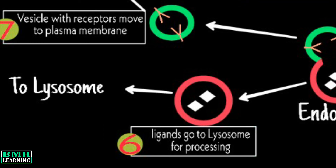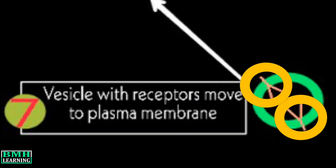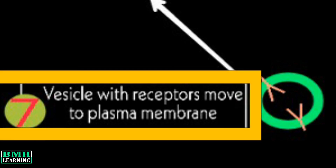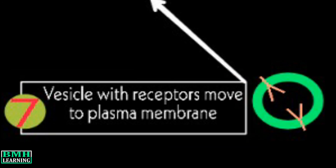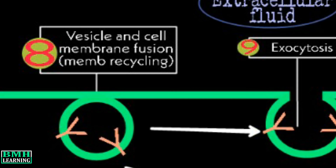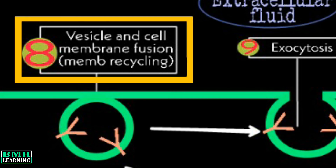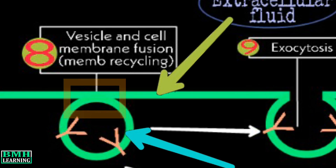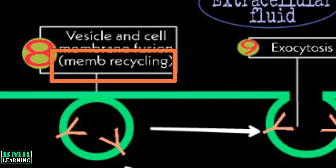From here, the ligands proceed to the lysosome for final degradation. Now what about the receptors and the vesicle? The focus shifts to step 7, where this subcellular body moves to the plasma membrane. This movement leads us to step 8, where both the vesicle and the cell membrane fuse, and by doing this we have recycled the membrane.